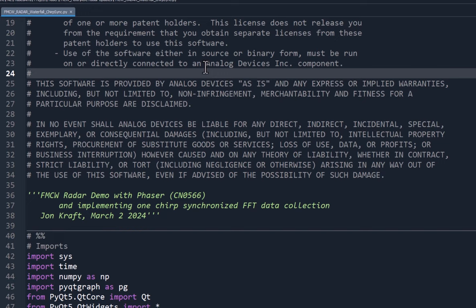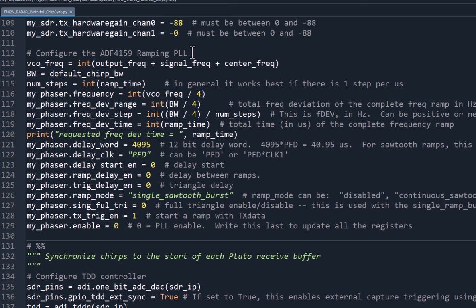There's really only three changes that I've made from the previous program. The first change is to the ADF4159 PLL. We need to tell it to expect a pulse on the TxData pin and to start a ramp when it receives that pulse. We do that just by setting this TxTrigEnable to high. It was 0 before, but now we set it to 1. Then our ramp mode used to be continuous sawtooth or continuous triangular, but now we're going to make it single sawtooth burst. So each time this TxData pin is toggled, it's going to emit one sawtooth ramp.